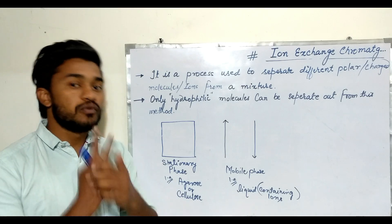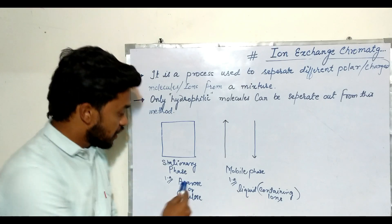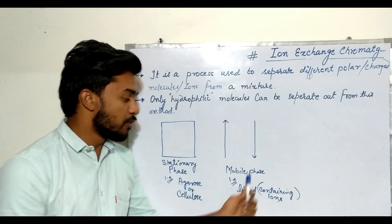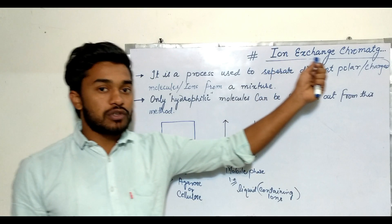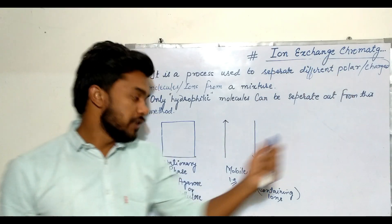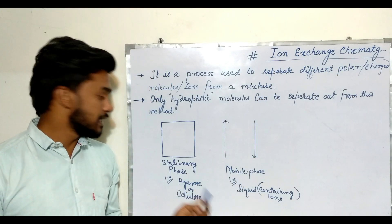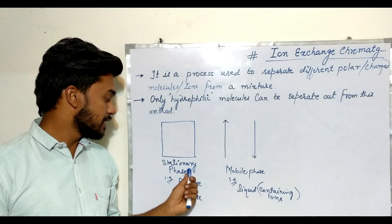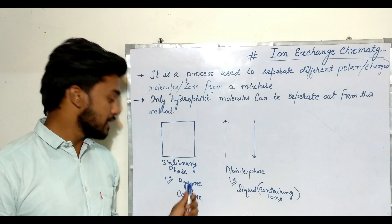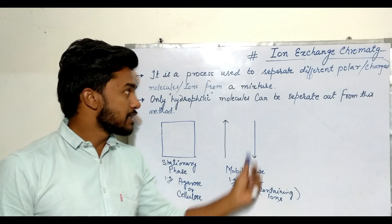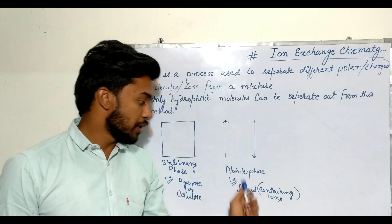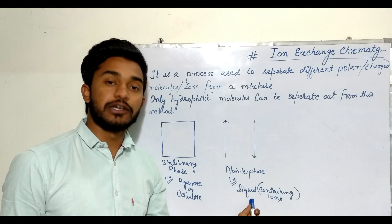As I already told you, every type of chromatography depends upon two phases: the stationary phase and the mobile phase. In ion exchange chromatography also we have two phases — the stationary phase, which is agarose or cellulose, and the mobile phase.